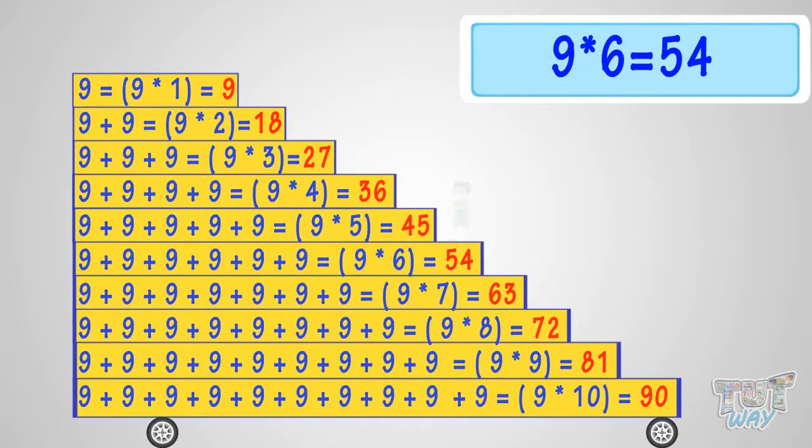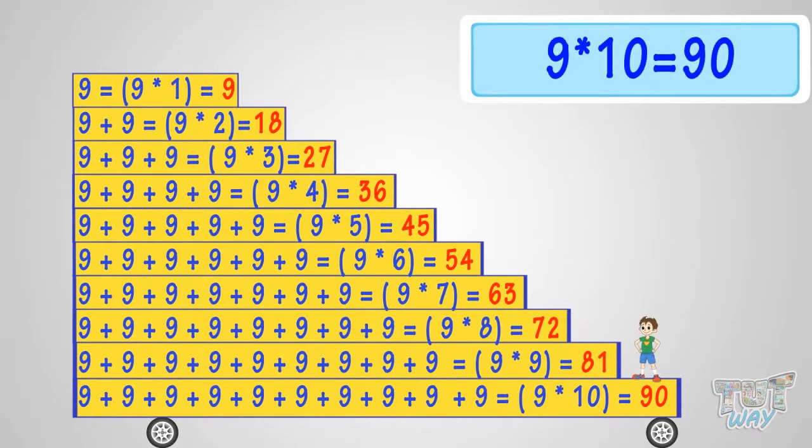9 times 6 is 54, 9 times 7 is 63, 9 times 8 is 72, 9 times 9 is 81, 9 times 10 is 90. Good!